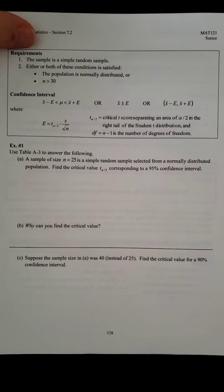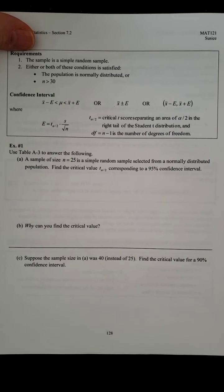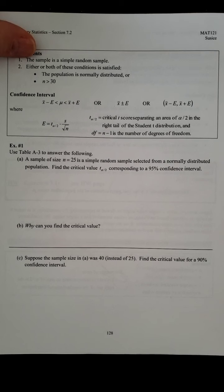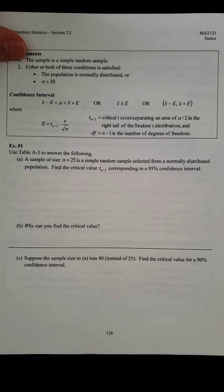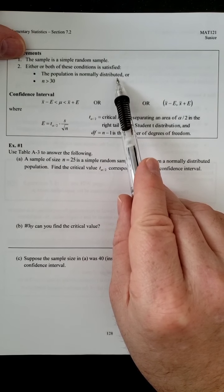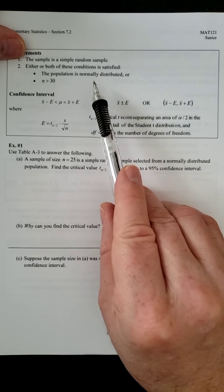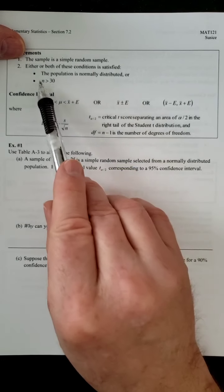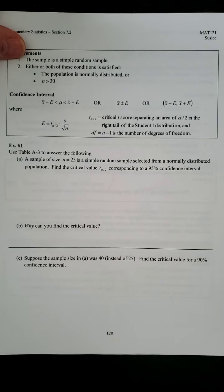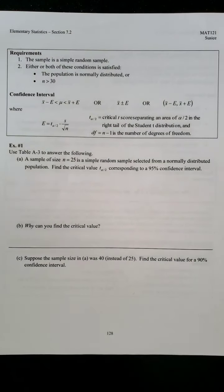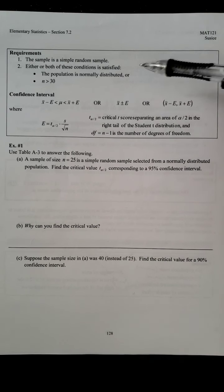So we got the sample is a simple random sample. That's traditionally the case. That one's really not going to be a big check that we have to worry about. But it is important and we should have that in place. The second one is the more important one. So either or both of these conditions is satisfied. The population is normally distributed. So we've seen that before back in 6.4 with the central limit theorem. Or N is greater than 30.